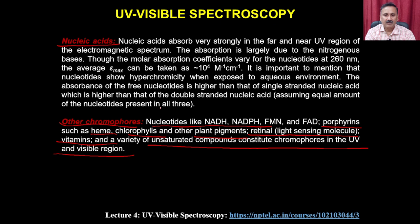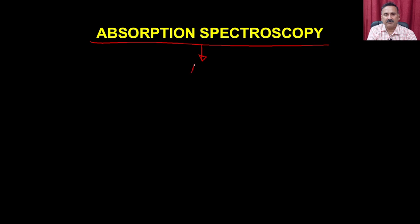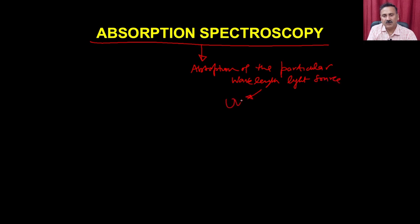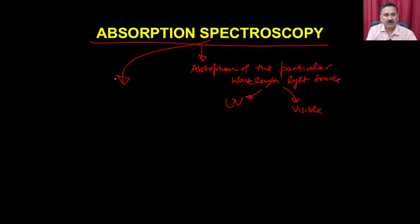UV-visible spectroscopy can be done in two modes: absorption mode and difference spectroscopy. In absorption mode, you study the absorption of a particular wavelength light source, either in the UV or visible range. Absorption spectroscopy works on the electronic configuration of the molecule — if the electronic configuration is perturbed, it changes how easily an electron receives energy and transitions to a higher energy state, giving a specific and characteristic absorption spectrum.